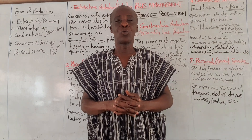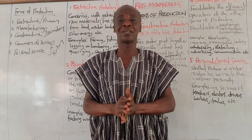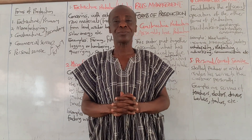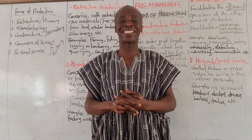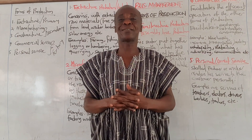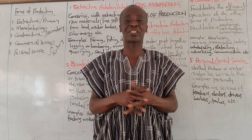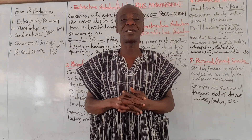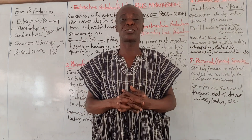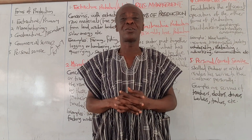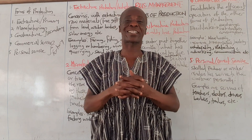We'll be looking at the forms of production. Take note the key word here is 'forms,' because there is another aspect we'll also be looking at called 'types of production,' and the two are not the same. For the forms, when you are doing economics you talk about types of industry: primary, secondary, and tertiary. But in business management we categorize into five.